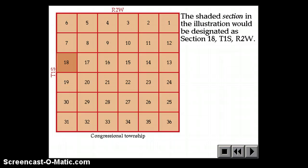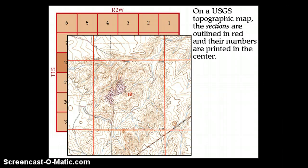You can look at that and pick out one, and this would be Section 18, T1S, R2W. But that's still a pretty big area. That's a one-mile by one-mile area.